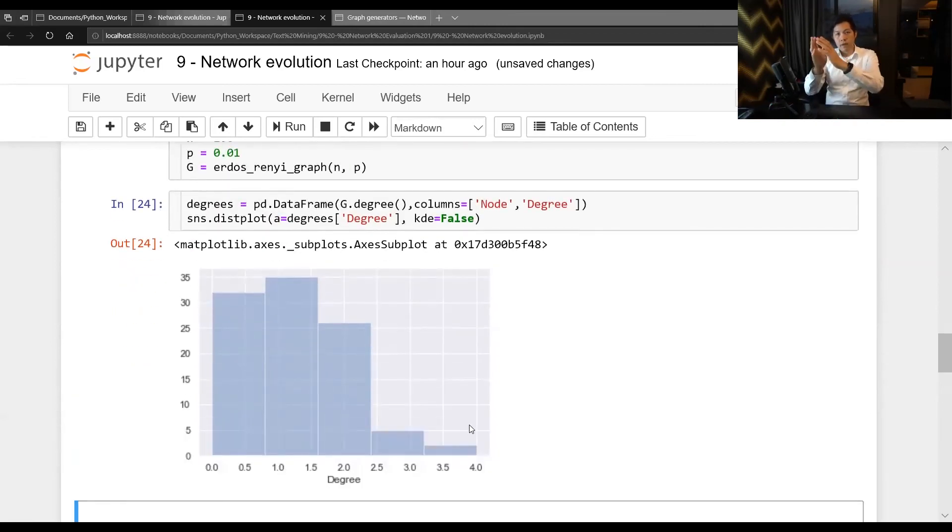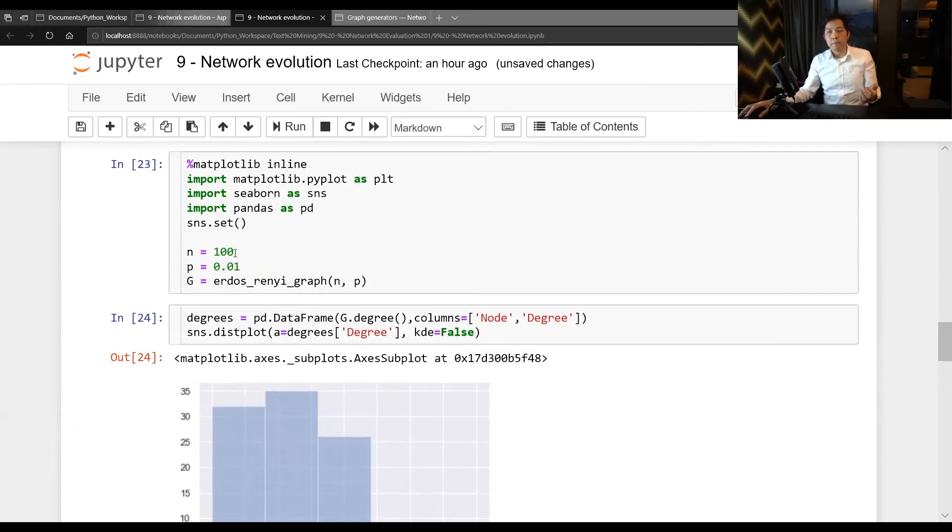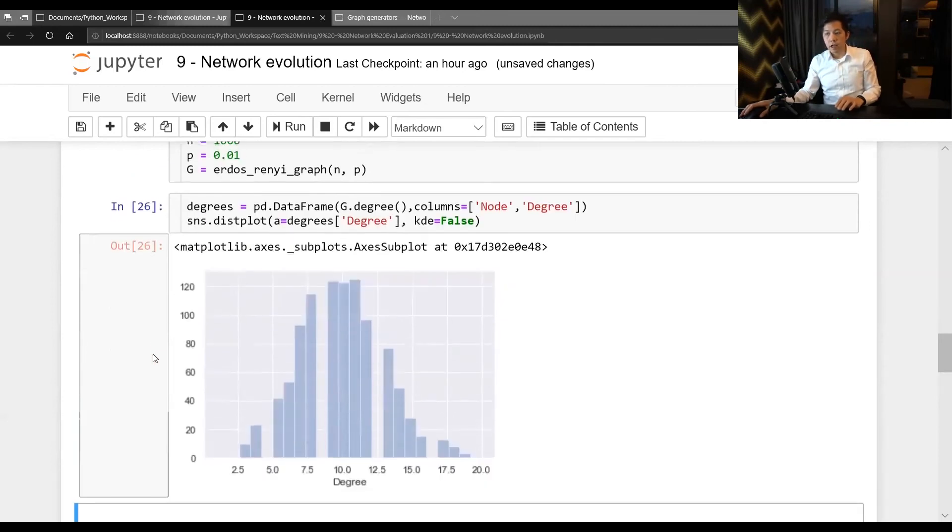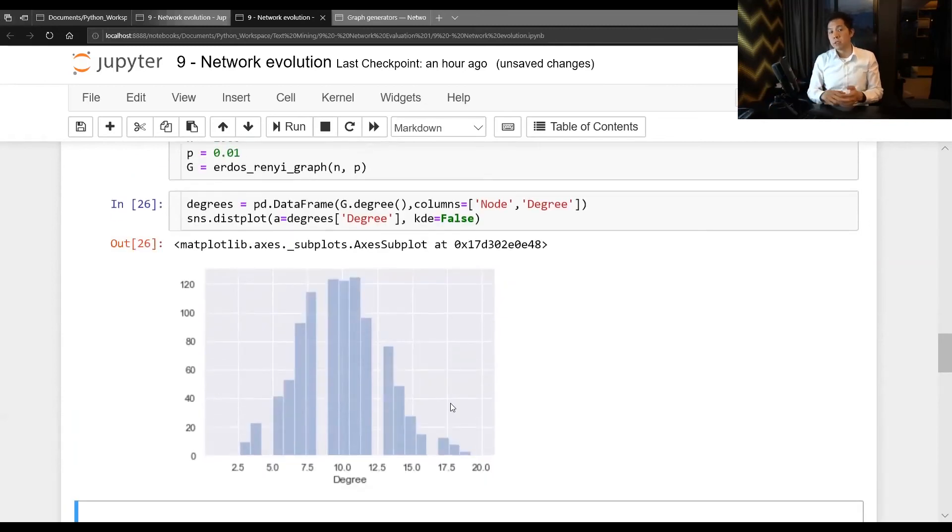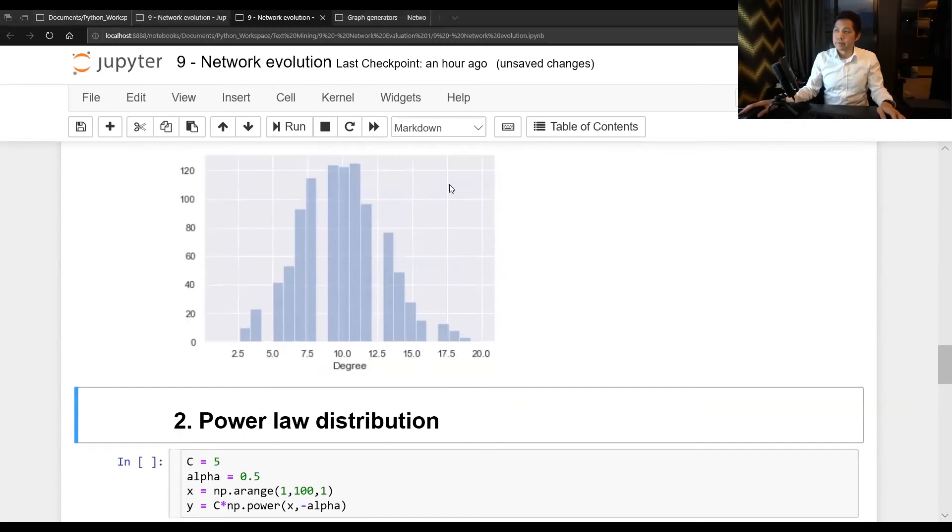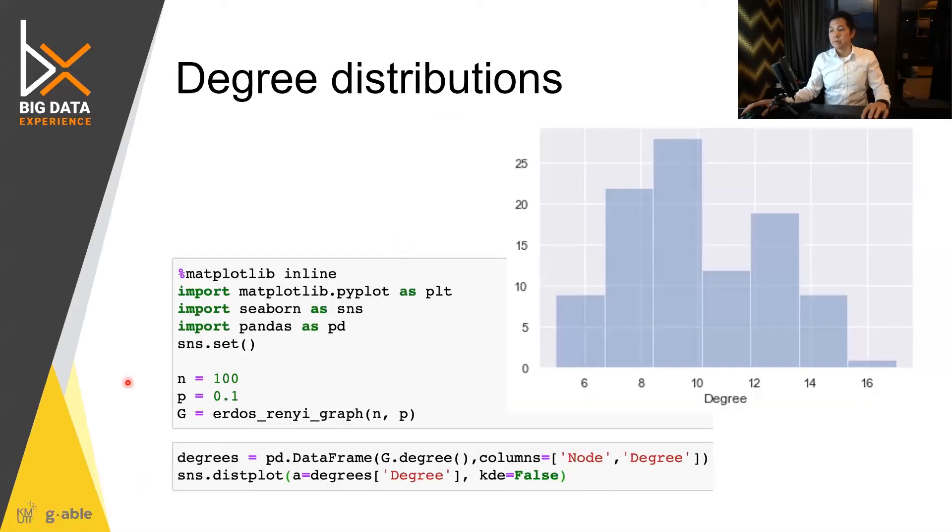And once you have N time P more than one, it now become closer to normal distribution. There's one distribution that behaved this way. It is the chi-square distribution. Let me change back to this.